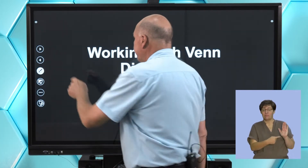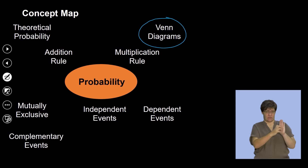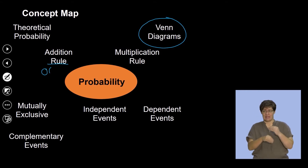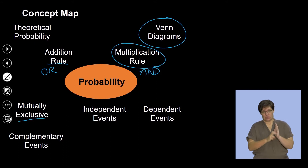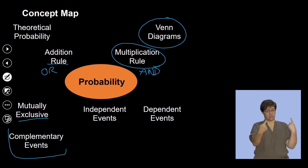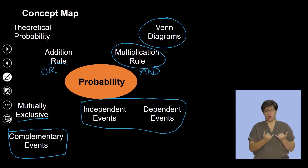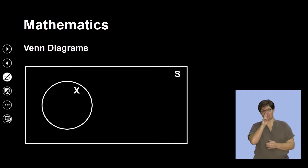In today's lesson, we're going to focus on Venn diagrams. In particular, we're going to explore the rules that we've already established: the addition rule, which we also call the OR rule; the multiplication rule, which is known as the AND rule. We're going to look at mutually exclusive events, complementary events with the complementary rule, and then introduce independent events and dependent events.